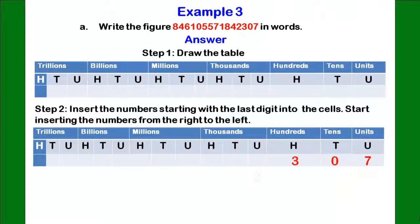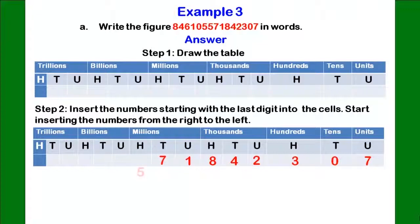We then move to the subdivision under thousands. 2 goes under the unit subdivision in the thousands column. 4 goes under the tens subdivision, followed by 8 which goes under the hundreds subdivision. The next is the million column — 1 goes under the unit subdivision, 7 goes under the tens subdivision, and 5 goes under the hundreds subdivision. We then move to the billion column — 5 goes under the unit subdivision, 0 goes under the tens subdivision, and 1 goes under the hundreds subdivision. We then move to the last column, trillion — 6 goes under the unit subdivision, 4 goes under the tens subdivision, and 8 goes under the hundreds subdivision.